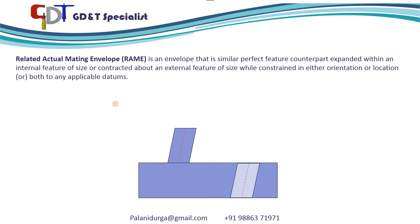Now if you want to understand this, it is very much similar to unrelated actual mating envelope. The only difference is that in unrelated actual mating envelope, the envelope does not take any reference of the datum, whereas a related actual mating envelope takes the datum reference.